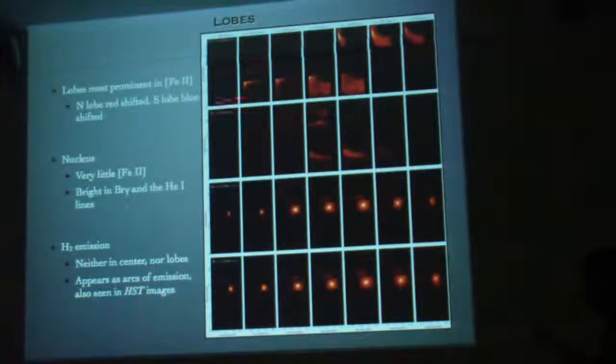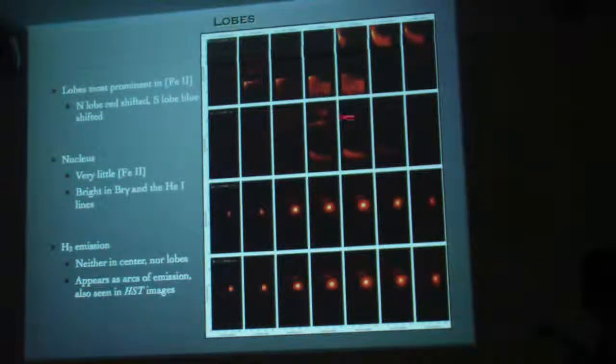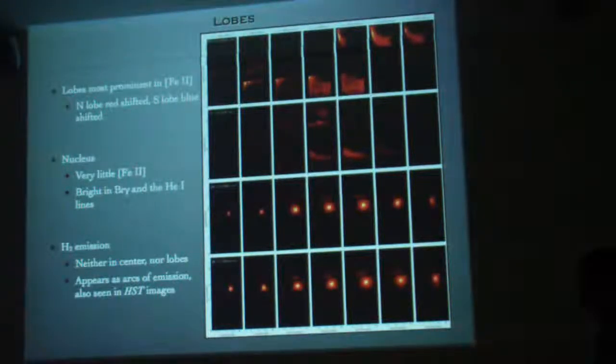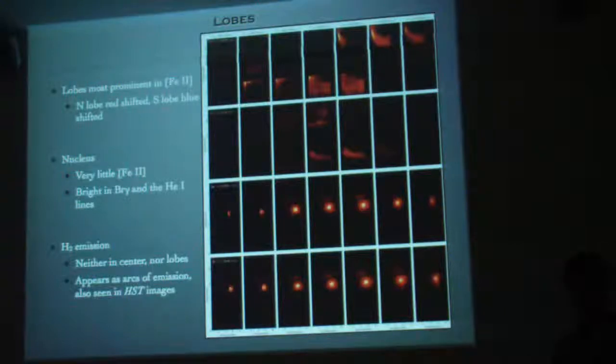In H2, it's interesting because it shows absolutely no molecular hydrogen in the nucleus, only these arcs of emission north and south of the nucleus. This is continuum subtracted. The emission in helium and also Brackett gamma, you can see it's dominated by the nucleus. The lobes don't show up here. There is emission there, but it's just not as bright. It's just really bright in the nucleus.